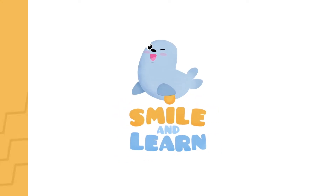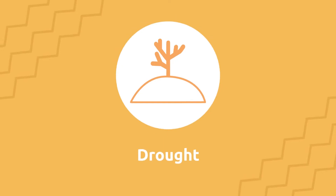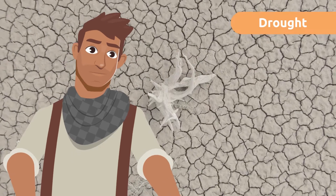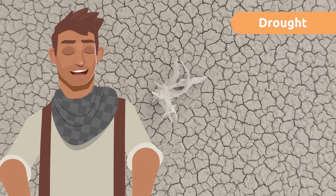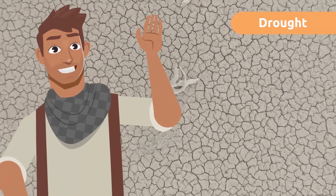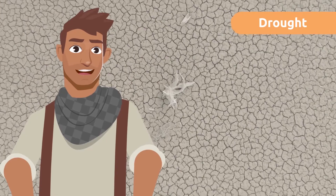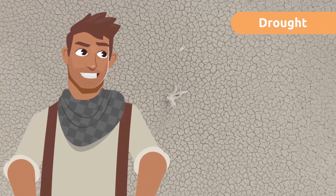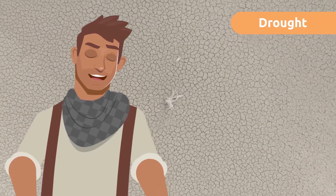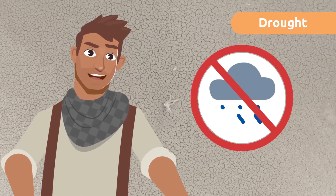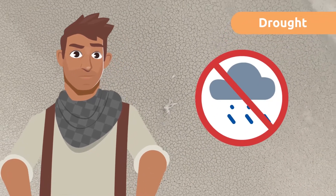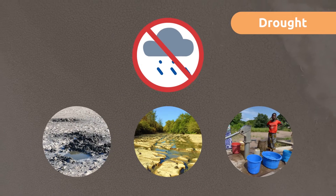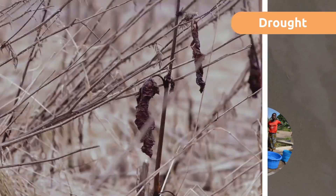A drought happens when there is less water than usually available in a given area for an extended period of time. Unfortunately, droughts are an increasingly common phenomenon due to the fact that rainfall is less frequent than in previous years. This means that rivers, lakes, and wells have significantly less water.